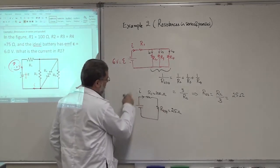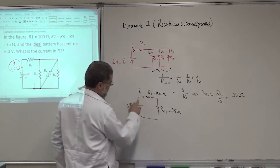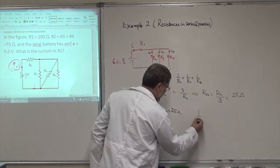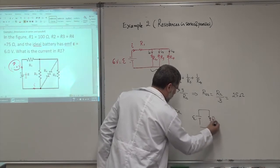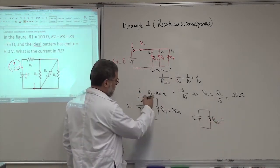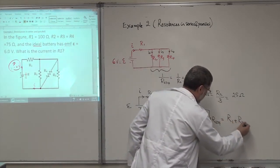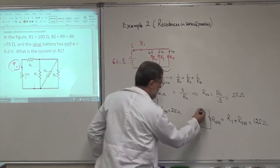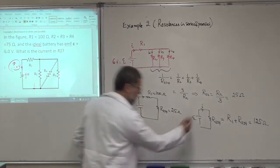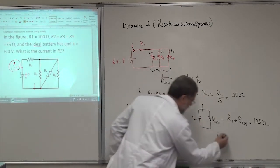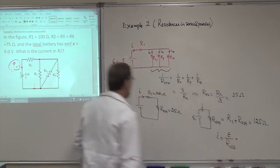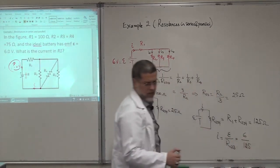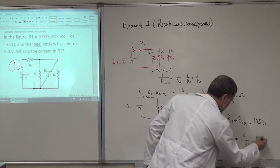To find the current I through R1, I find the total equivalent resistance: R₁₂₃₄ = R1 + R₂₃₄ = 100 + 25 = 125 ohms. The current I = EMF / R₁₂₃₄ = 6 volts / 125 ohms = 0.048 amperes. That's the current passing through the battery.